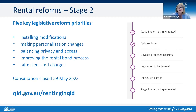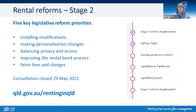Before we go to your questions, just the other announcement made by the Queensland Government — many of you would be aware of the announcement of stage two of the rental reforms. The government produced an options paper and sought feedback from the rental sector. That consultation closed on the 29th of May 2023. There were five key legislative reform priorities listed in that options paper: installing modifications, making personalisation changes, balancing privacy and access, improving the rental bond process, and fairer fees and charges. Remember, this is not law as of today — it was a consultation, and it's now back to the Department of Housing to review the feedback received. Once we know more, we will let you know.